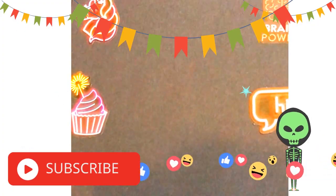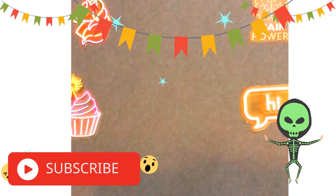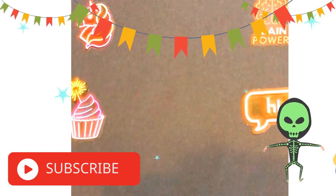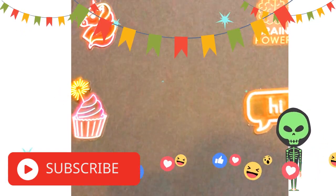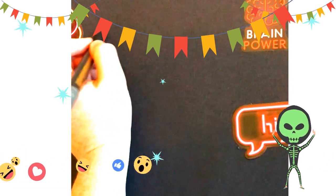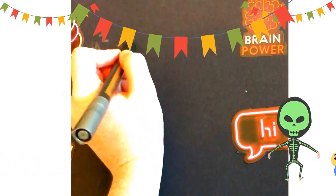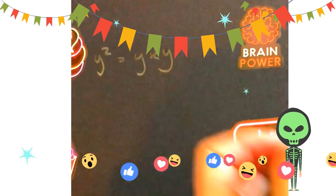Okay, so what do we know already? We know that when we've got something to the power, it means that we are multiplying it by itself. So for example, y squared is the same as saying y times y.